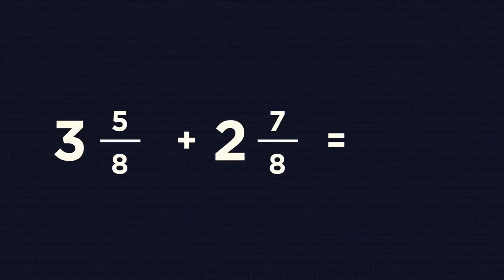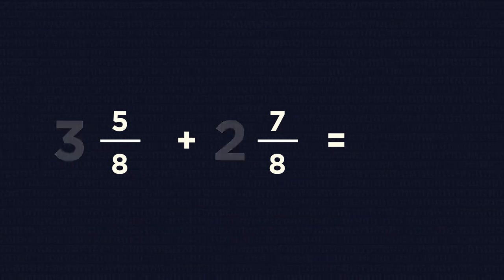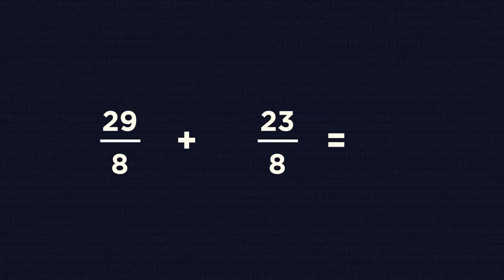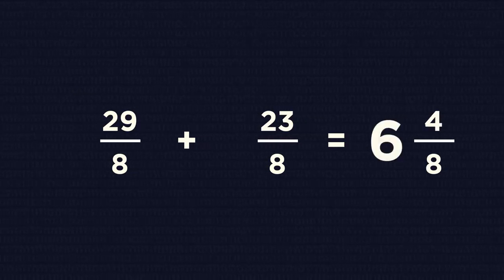Lastly, if your fraction has a whole number, remember to turn it into an improper fraction before adding or subtracting. Follow these steps to add mixed numbers. Convert to improper fraction first. Then add fractions, if the denominators are the same. And then convert back to a mixed number. Don't forget to simplify your fraction if necessary.